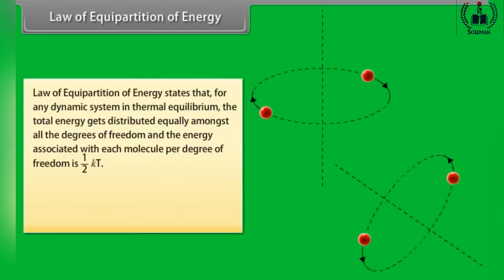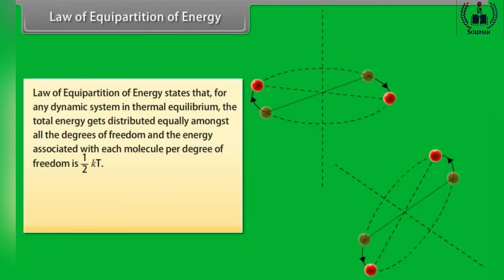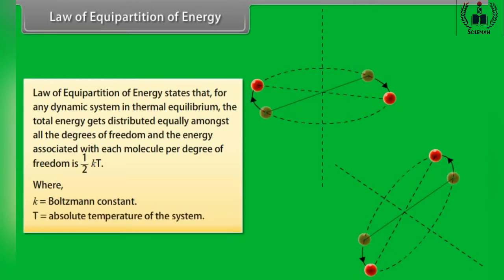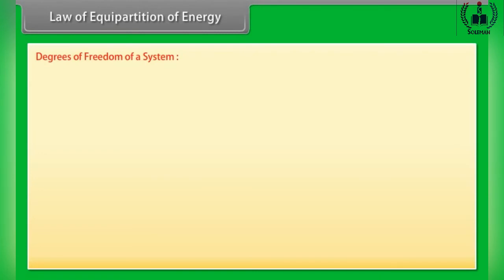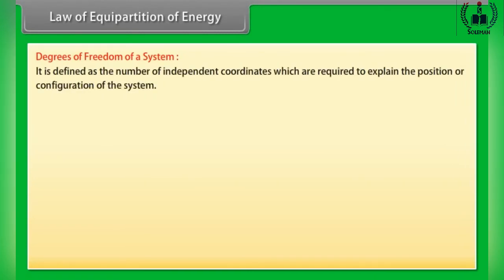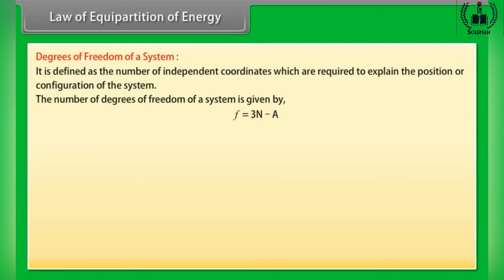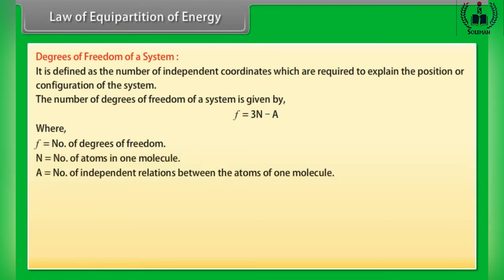Law of Equipartition of Energy states that for any dynamic system in thermal equilibrium, the total energy gets distributed equally amongst all the degrees of freedom, and the energy associated with each molecule per degree of freedom is (1/2)kT, where k is Boltzmann's constant and T is the absolute temperature of the system. Degree of Freedom of a system is defined as the number of independent coordinates required to explain the position or configuration of the system. The number of degrees of freedom is given by F = 3N − A, where N is the number of atoms in one molecule and A is the number of independent relations between the atoms.